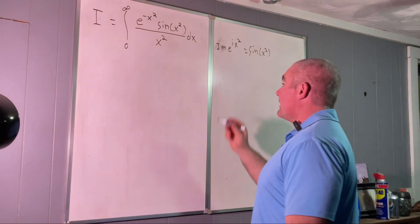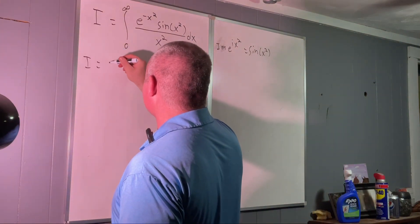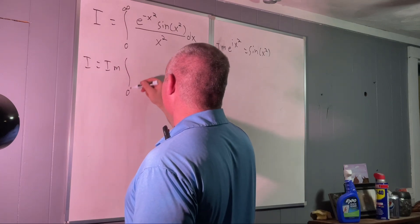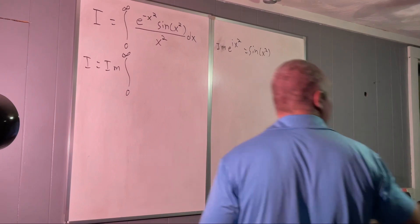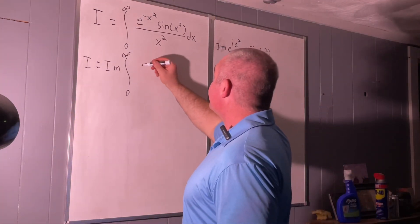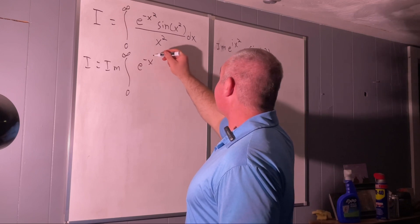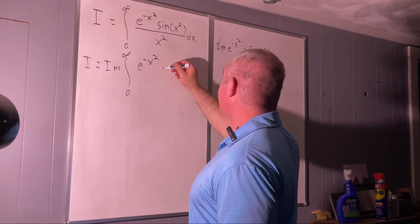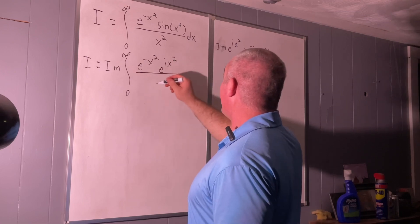So let's go ahead and rewrite our integral. I is equal to the imaginary part of the integral from zero to infinity of e to the negative x squared times e to the ix squared over x squared dx.